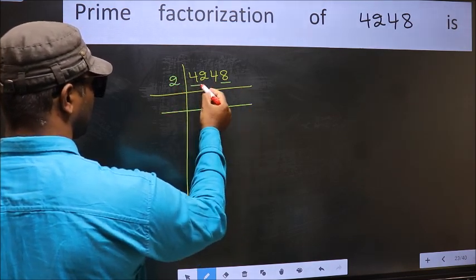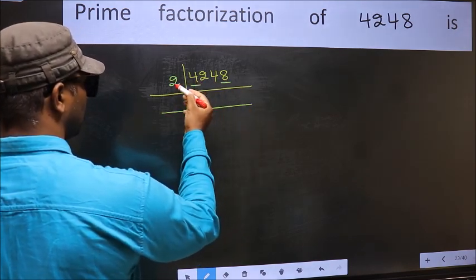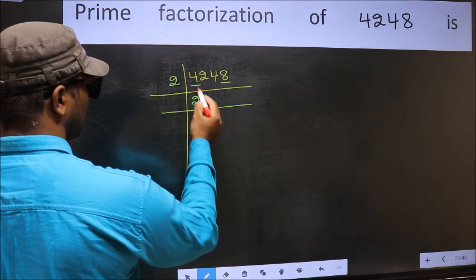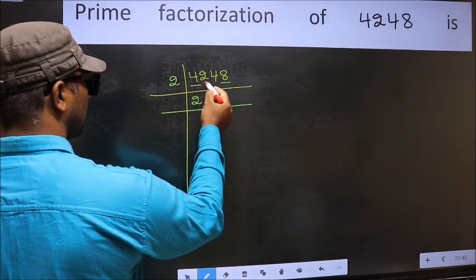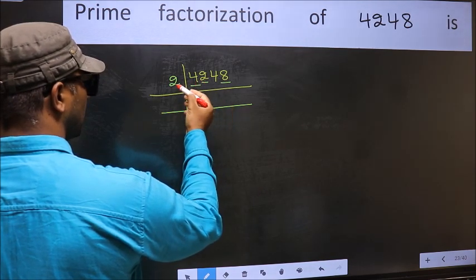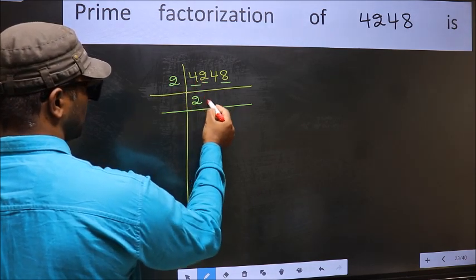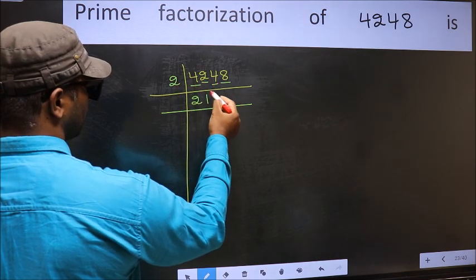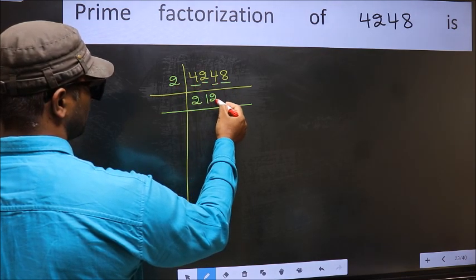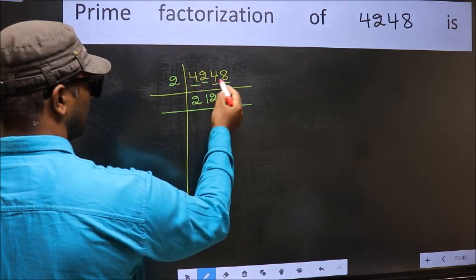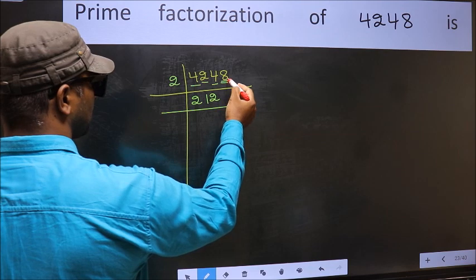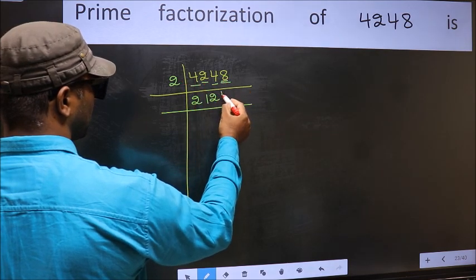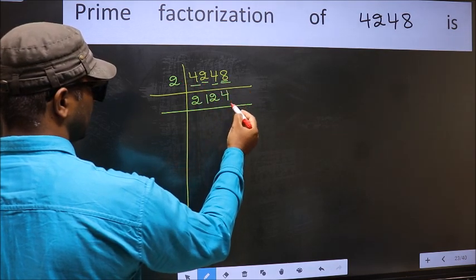First number 4 — when do we get 4 in the 2 table? 2, 2's 4. The other number 2 — when do we get 2 in the 2 table? 2, 1's 2. The other number 4 — when do we get 4 in the 2 table? 2, 2's 4. The other number 8 — when do we get 8 in the 2 table? 2, 4's 8.